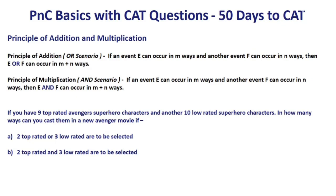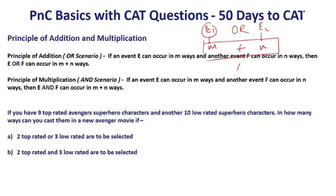Very important from PNC standpoint: the principle of addition and multiplication. If there are two events E1 and E2, where E1 happens in M ways and E2 happens in N ways — if the scenario is E1 OR E2, you take M plus N ways. If the scenario is E1 AND E2, you take M into N ways.